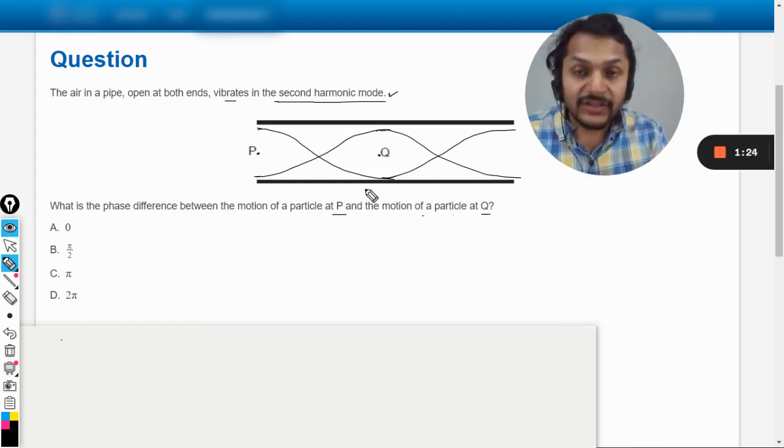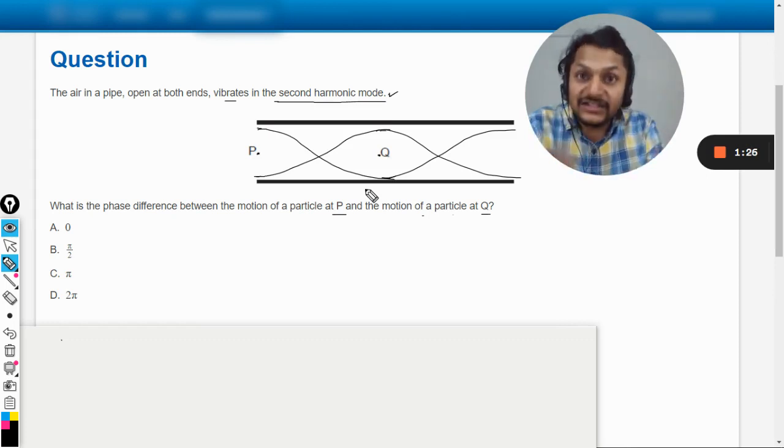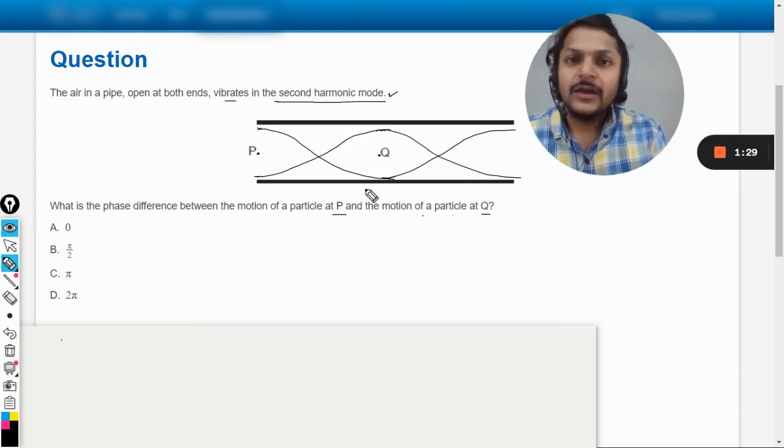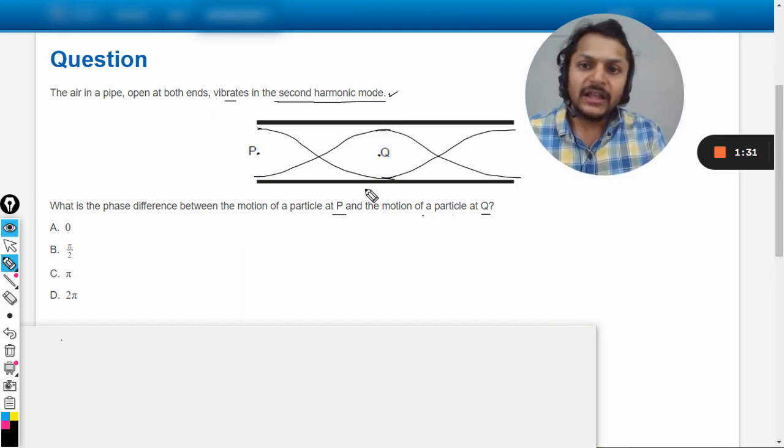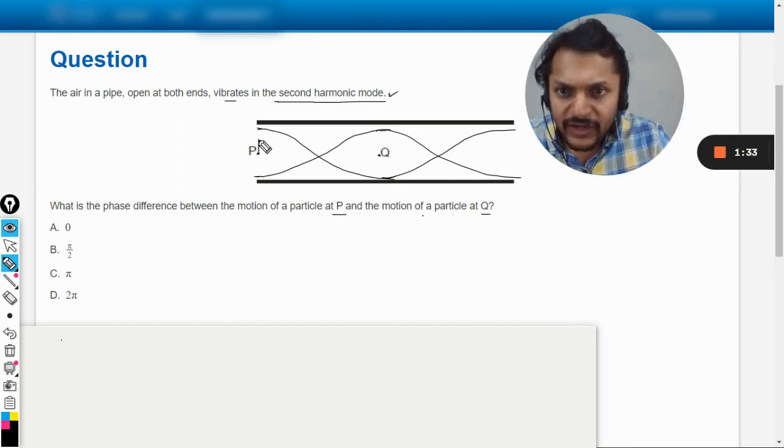So it is the property of the standing wave that two points which are in the adjacent segments, they are always out of phase with the phase difference of pi. Like if this P particle is moving upward, this Q will definitely be going downward.